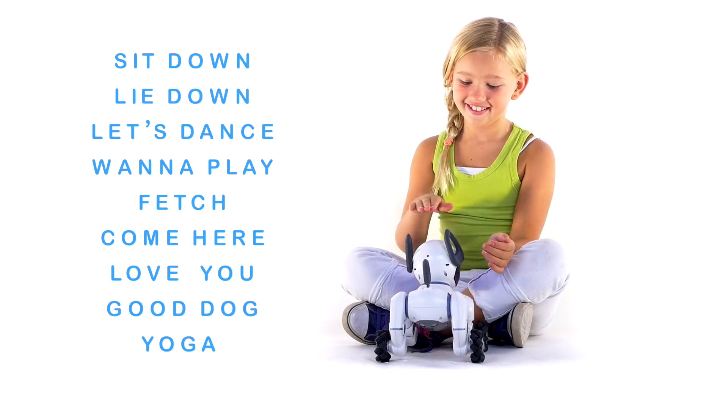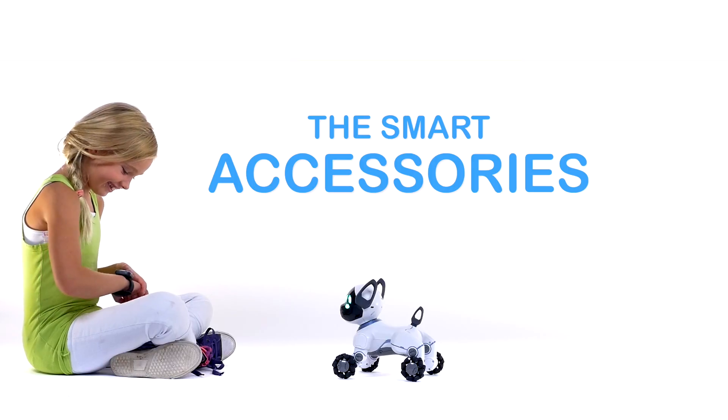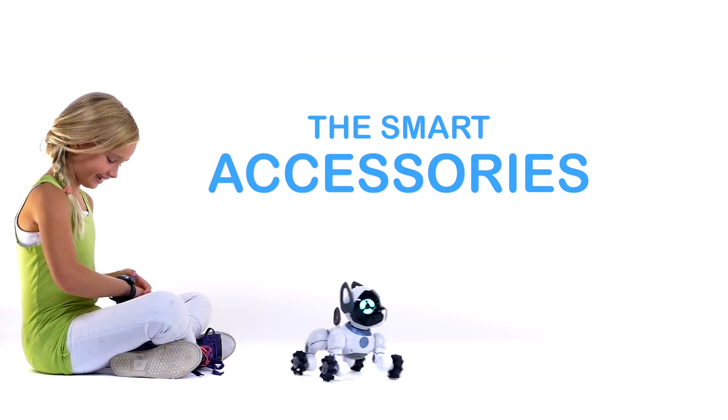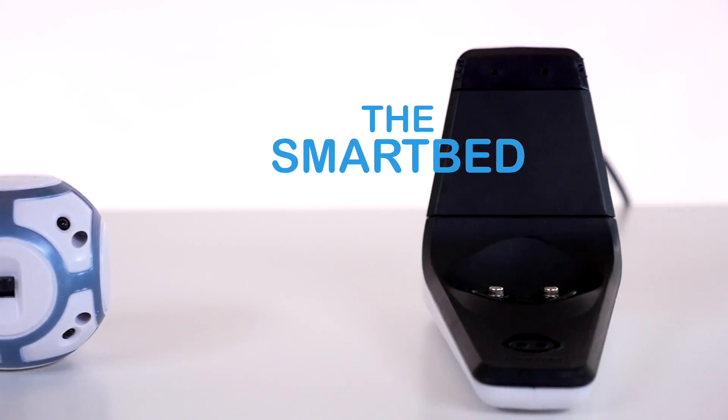For a full list of voice commands, check out the Chip app. Chip comes with three connected accessories that bring him to life in many exciting different ways. The smart band, the smart ball, and the smart bed.